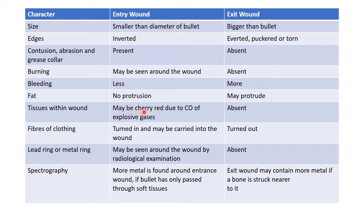The tissues within an entry wound may be cherry red due to carbon monoxide from explosive gases, whereas this cherry red color will be absent in the case of an exit wound.